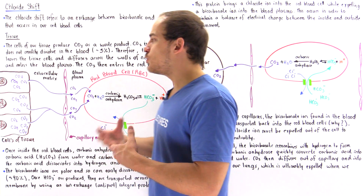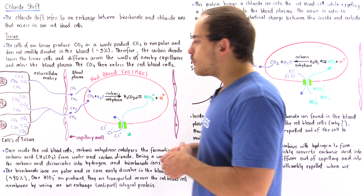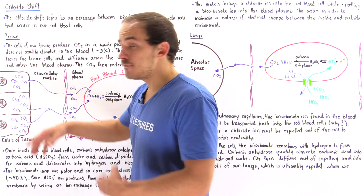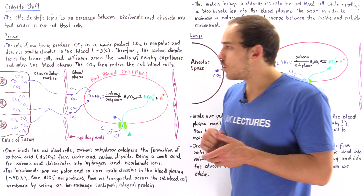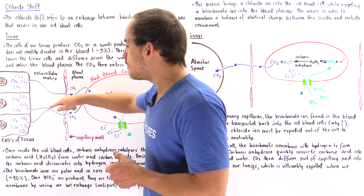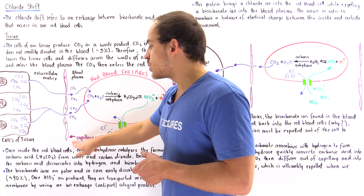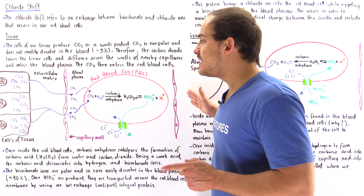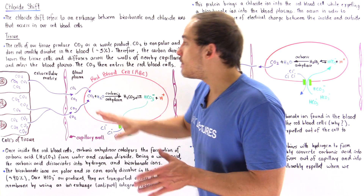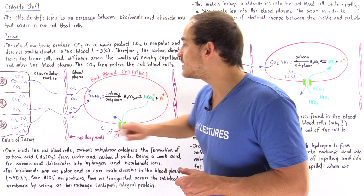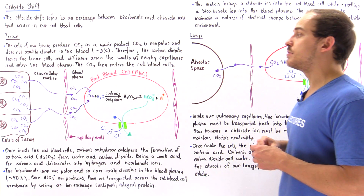About 90% of the carbon dioxide actually exists in its bicarbonate ion form. Inside the cells of our tissue, different metabolic processes produce carbon dioxide molecules, and because these molecules are non-polar, they can easily diffuse across the cell membrane into the extracellular matrix, then across the nearby capillary walls. Once inside the blood plasma, about 5% of the CO₂ remains there, but the rest diffuses across the membrane of the red blood cells.